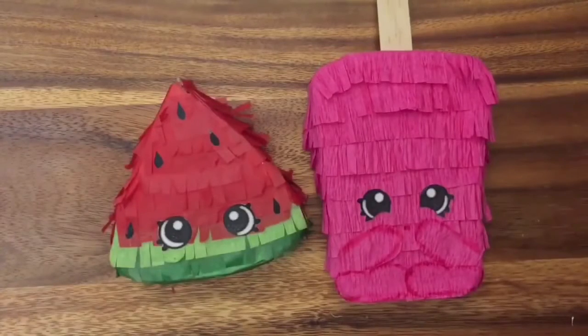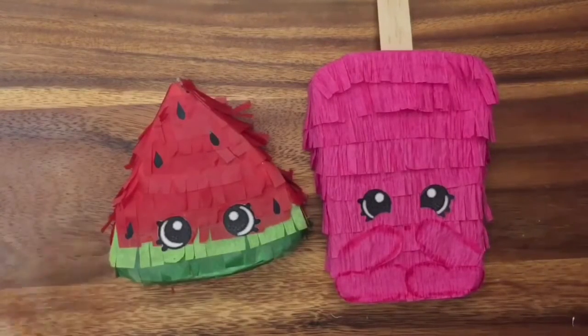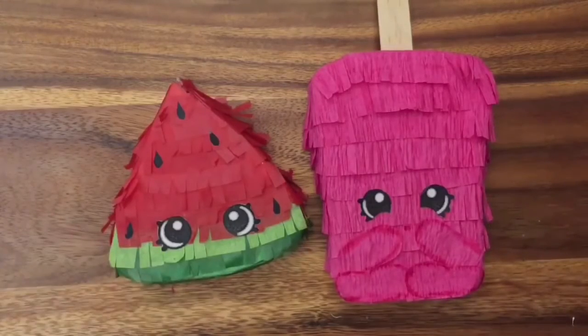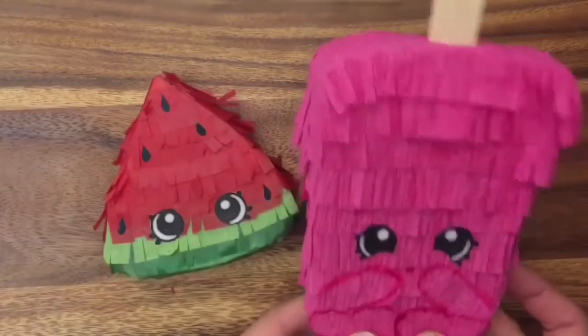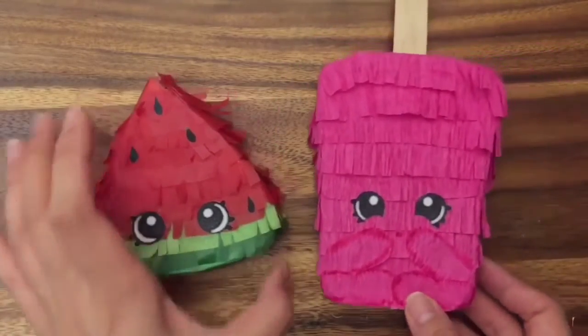Or you can actually make them life-size or pinata size. You just have to scale my tutorial up. So you can make it either size. It's easier to do the tutorial small, and it is a lot faster. So I'm going to show you how to make this popsicle one, but it will be the same type of instructions for the watermelon one or any other Shopkins pinata that you would want to make.